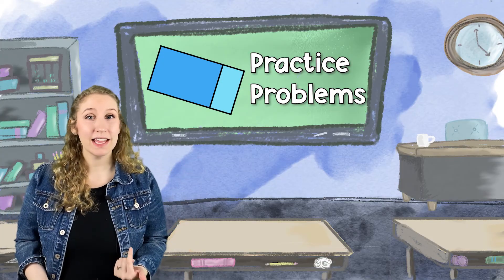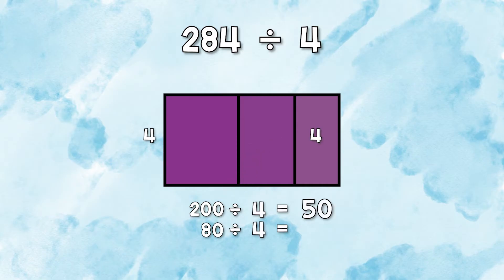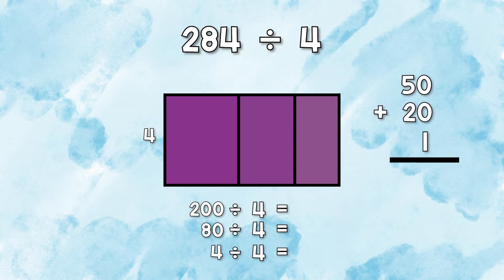All right, now that you know why you can divide using a box model and why it's useful, let's practice a few together. 284 divided by 4. We're going to first break it down by place value, so that's 280 and 4. Let's divide. 200 divided by 4 equals 50, 80 divided by 4 equals 20, and 4 divided by 4 equals 1. Now we're going to add those partial quotients up to get our final answer.